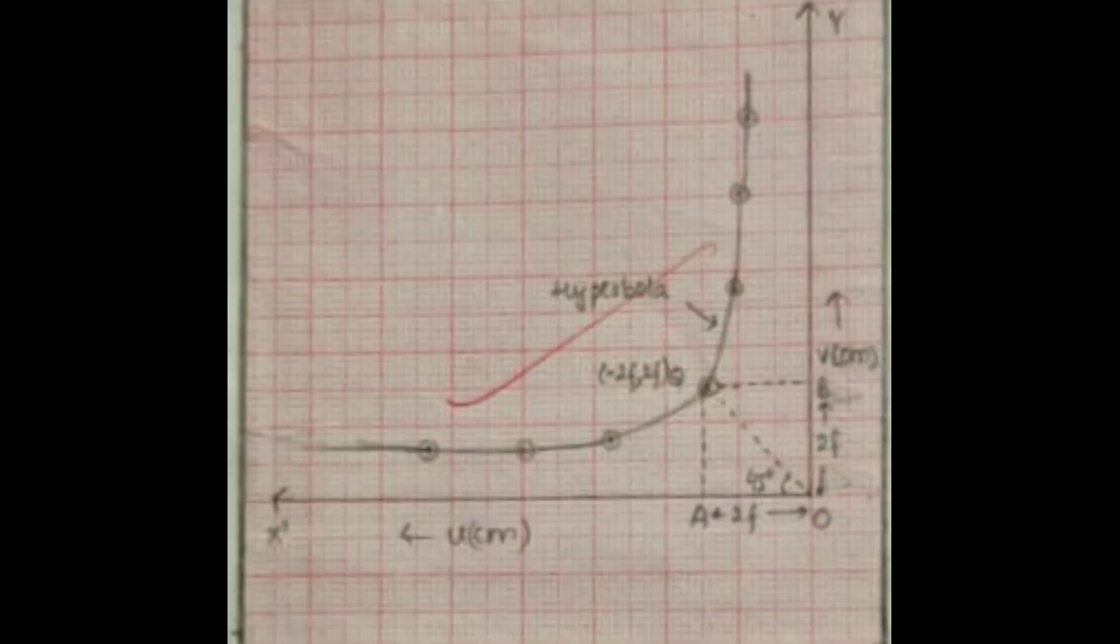This image shows the graph between u and v. You should note the graph carefully. As you can see, a hyperbola is formed as the graph is constructed, so take note of this image carefully.